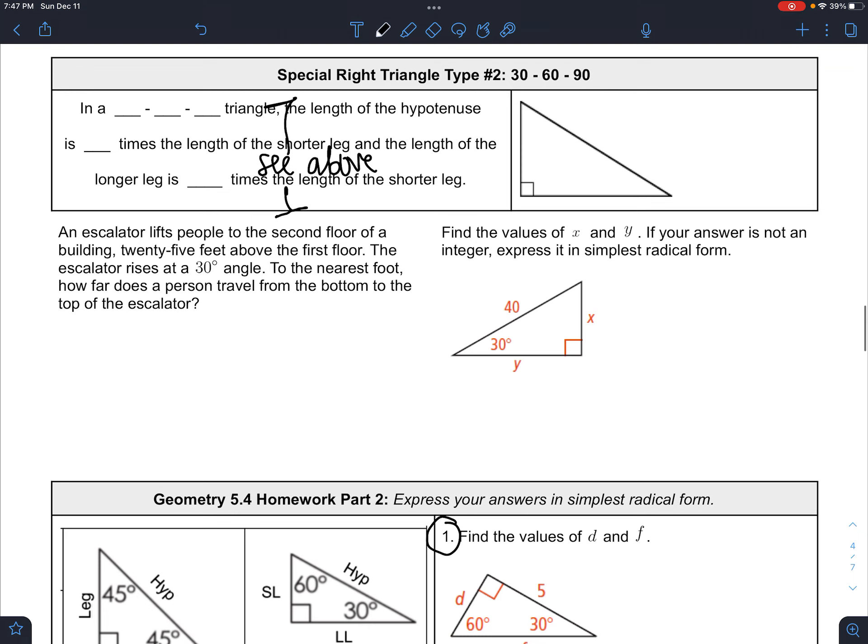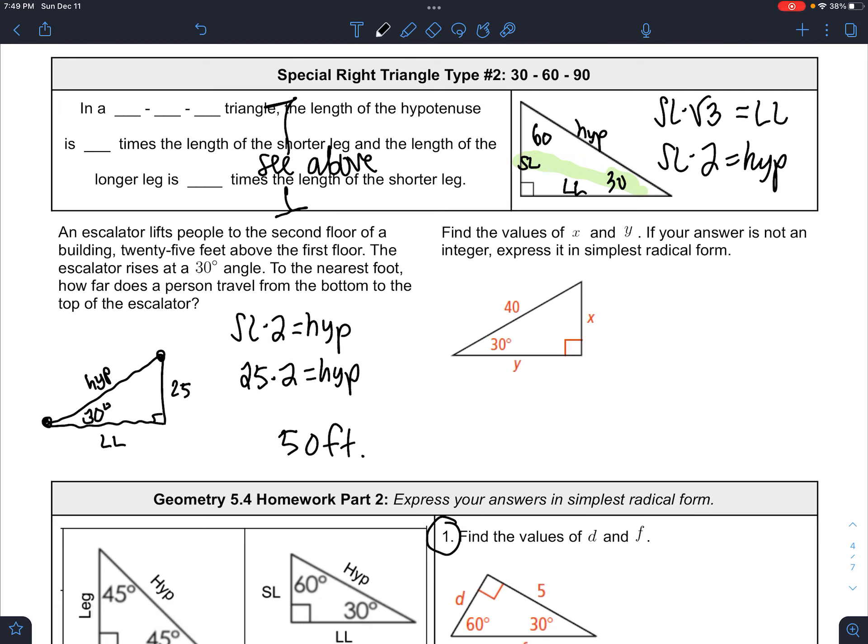A couple more to practice and then the video will end. We've seen this box before, but let's rewrite the formulas for the 30, 60, 90. This is the 30 degree, 60 degree. This is the long leg, this is the short leg, this is the hypotenuse. Remember too that the short leg is always opposite the 30 degree, because the smaller angle goes with the smaller side. An escalator lifts people 25 feet up, and the escalator goes up at a 30 degree angle, which makes this a special right triangle question. So this would be the long leg and the hypotenuse. To the nearest foot, how far does a person travel from the bottom to the top of the escalator? That's the hypotenuse. But the short leg times 2 is the hypotenuse, so 25 times 2 is the hypotenuse, so the answer is just 50 feet. Pretty cool.